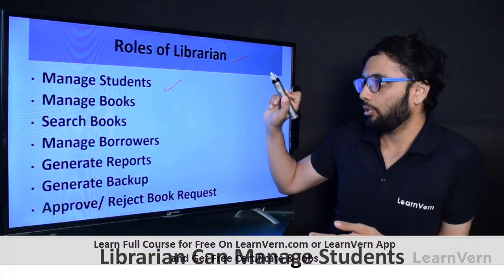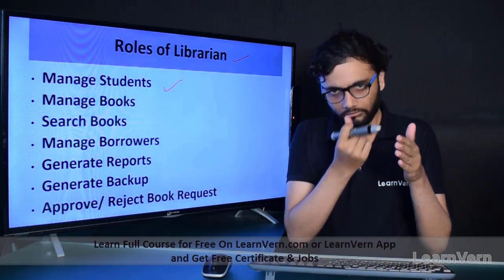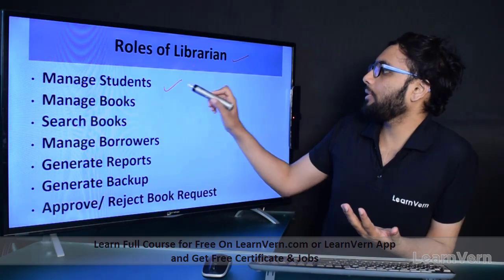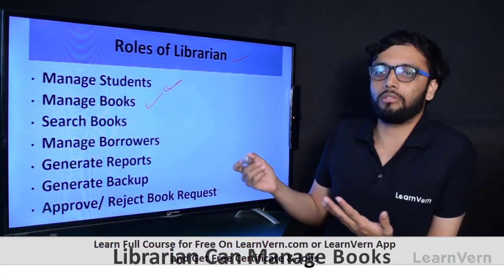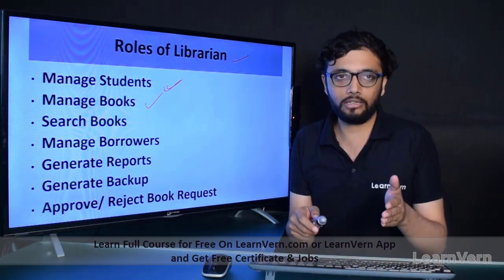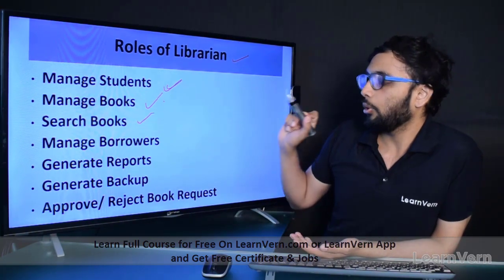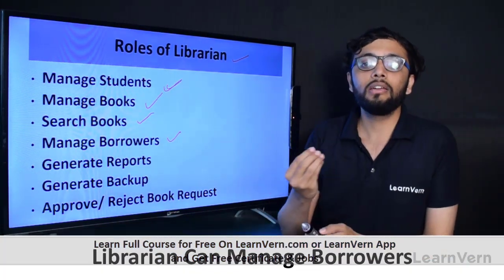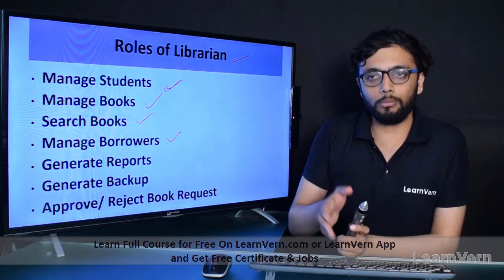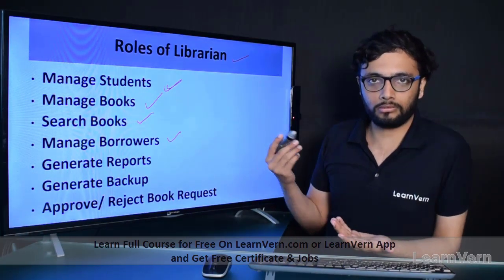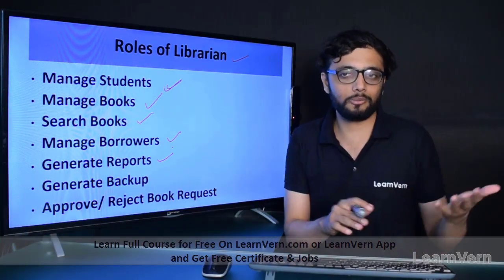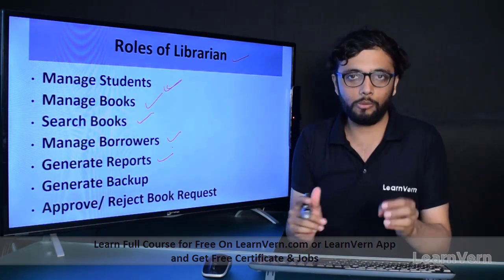After that, roles of librarian - librarian is an employee of the library. Librarian can manage students, meaning if a new student is added to the college or library as a new member, the librarian can add the students. Librarian can update and delete books - that's managing books. Librarian can also search the books to see if stock is available or not, and manage the borrowers.